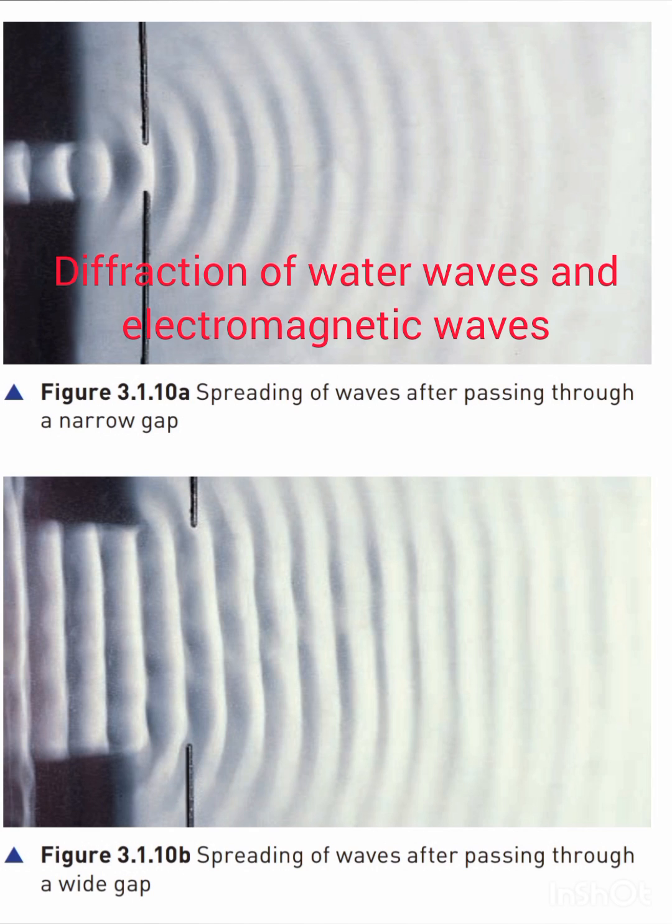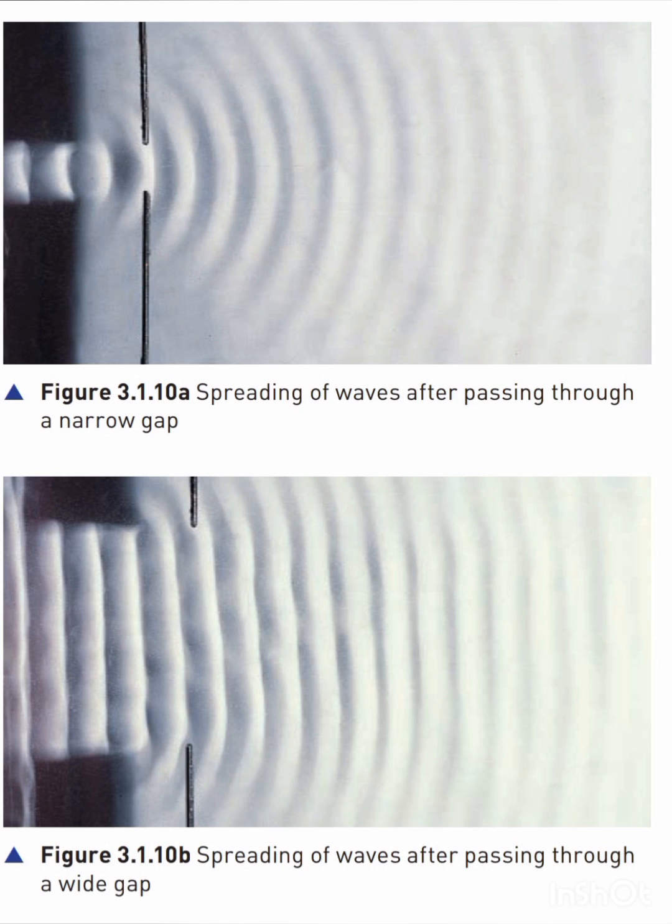Diffraction is done by both kinds of waves — mechanical waves and electromagnetic waves; they both do diffraction. In this video we are going to learn about how diffraction takes place. Diffraction is when a wave passes through a gap.